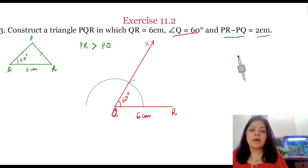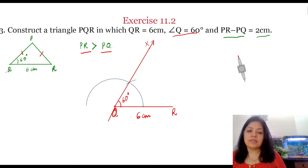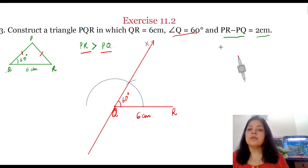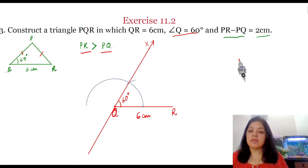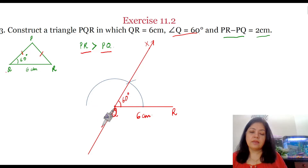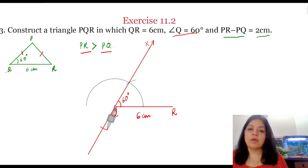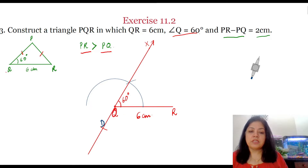Since PR is greater than PQ, that is this side is greater than this side, we will extend this ray QX below QR. Since PR minus PQ is equal to 2 cm, we will open our compass equal to 2 cm. Place the compass at Q and cut this ray QX below QR. Let this point of intersection be point D.